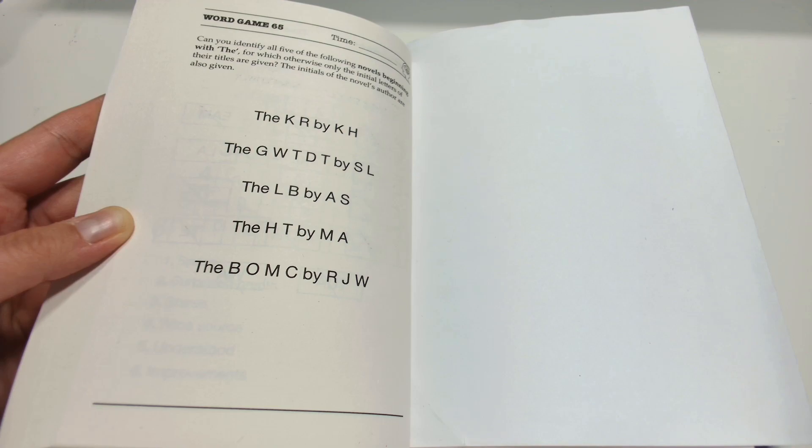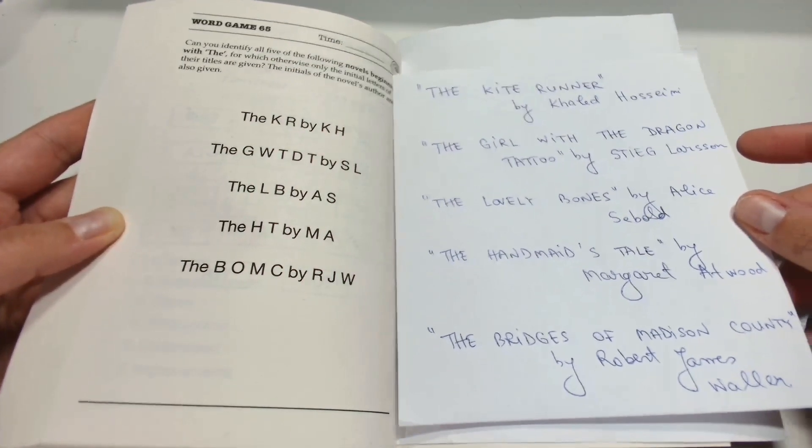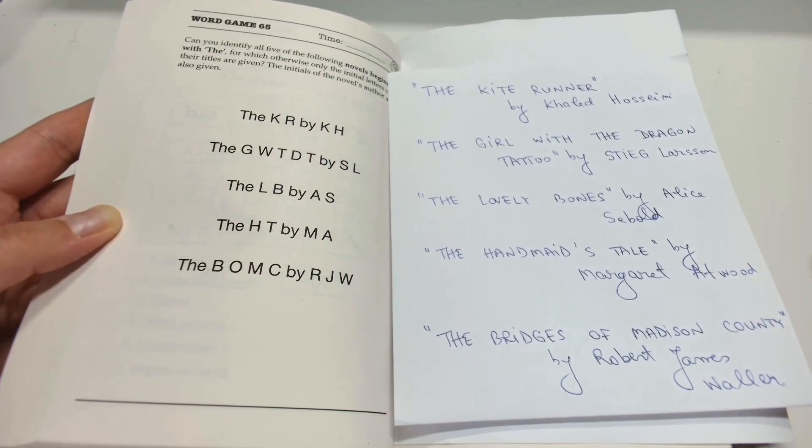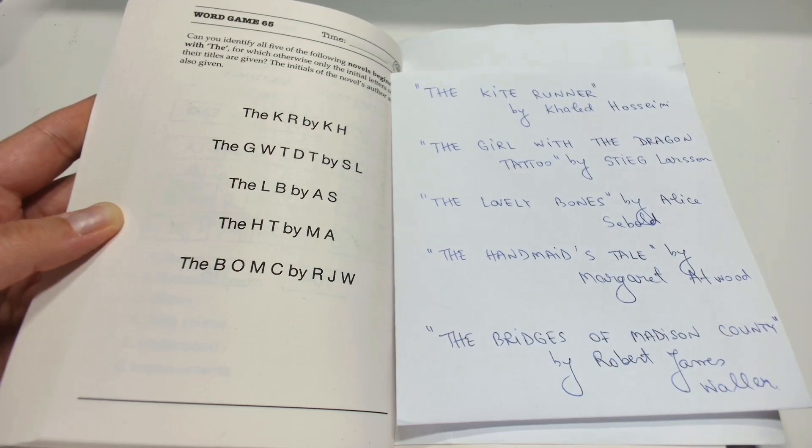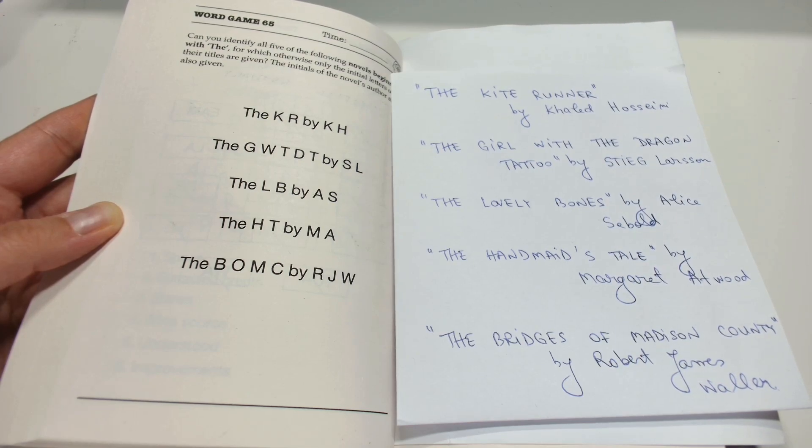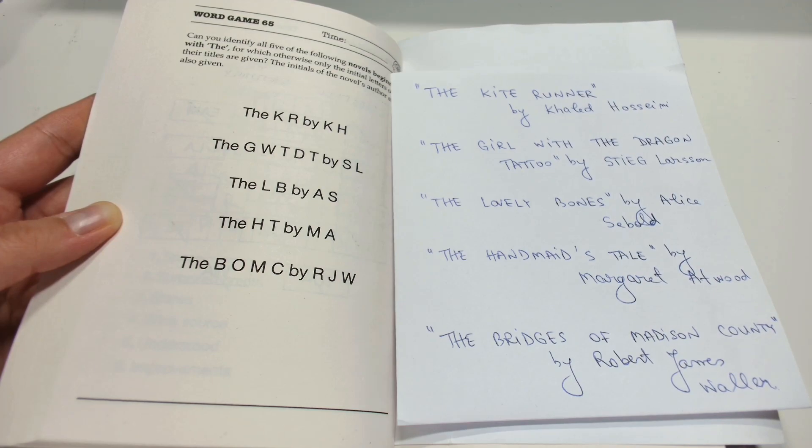Are you ready? The novels are: The Kite Runner by Khaled Hosseini, The Girl with the Dragon Tattoo by Stieg Larsson, The Lovely Bones by Alice Sebold, The Handmaid's Tale by Margaret Atwood, and The Bridges of Madison County by Robert James Waller.